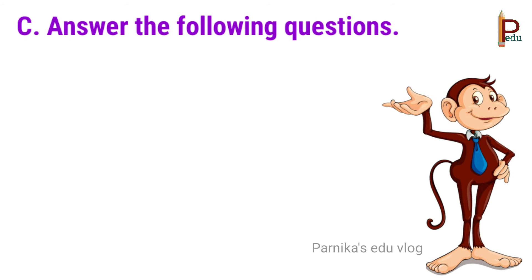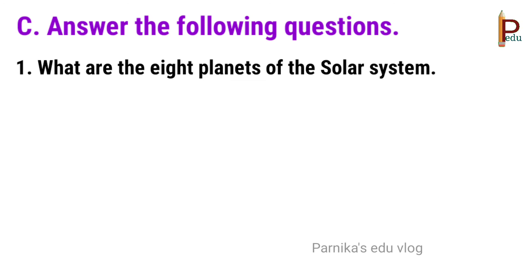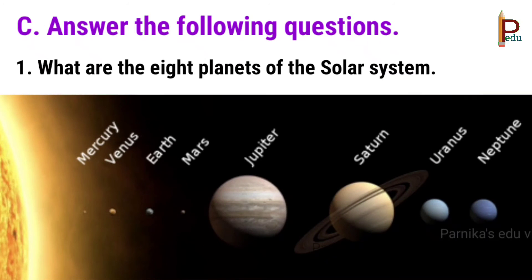Children, next answer the following questions. First one, what are the 8 planets of the solar system? Answer: Mercury, Venus, Earth, Mars, Jupiter, Saturn, Uranus and Neptune.